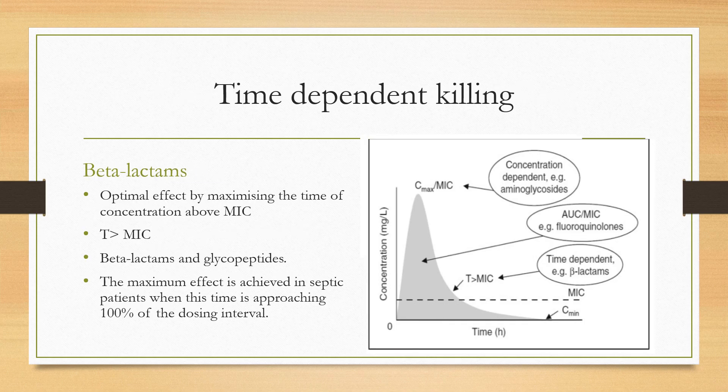In time-dependent killing, the amount of time the antibiotic concentration in serum remains above the minimum inhibitory concentration is important. Optimal effect is obtained by maximizing the time for which concentration stays above the MIC. The antibiotics with time-dependent killing are beta-lactams and glycopeptides, which typically require 8-hourly or BD dosing. In septic patients, maximum effect is achieved when the time above MIC approaches 100% of the dosing interval.